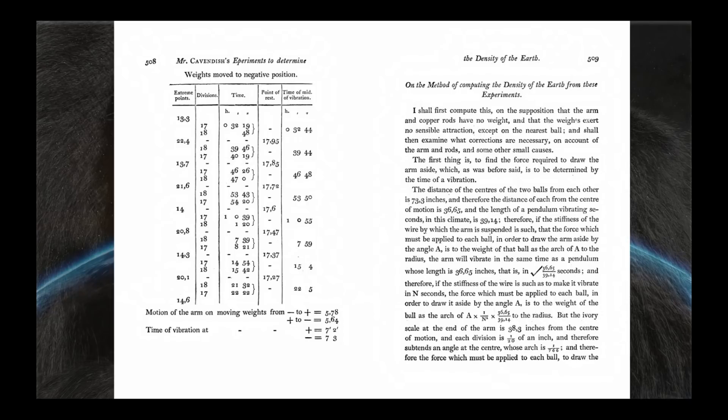Now Cavendish goes through in the intervening pages between what we just read, and this is getting into the summary end of it. He goes through all of his data on 23 different experiments, I think. It's quite a voluminous amount of material to wade through. So we're not going to try to even do any of that. But starting here on this page, this is where he titles it: on the method of computing the density of the earth from these experiments. And he goes through quite a detailed description of exactly how the computations are made.